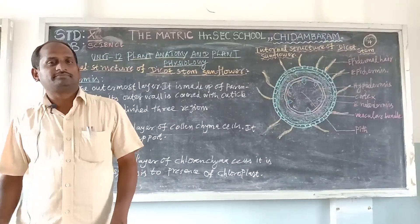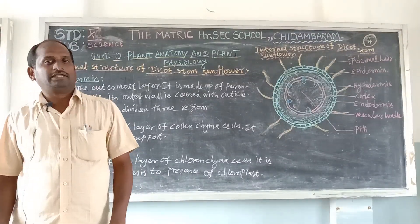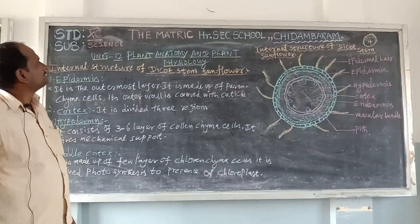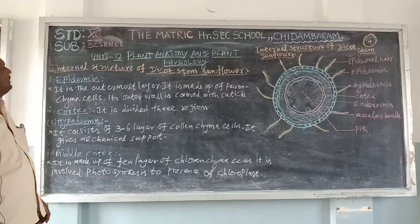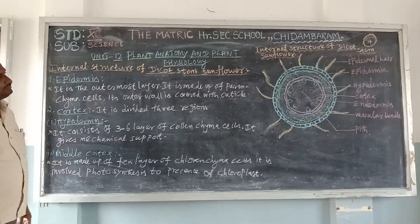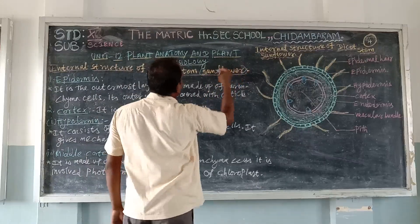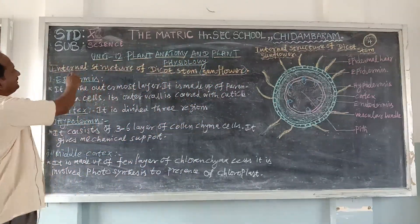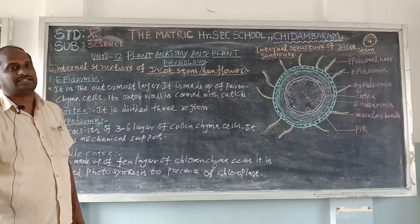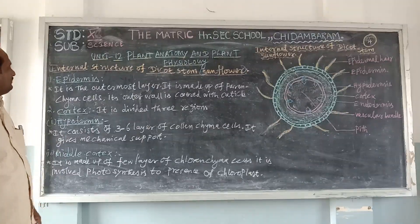Good morning students. The last class is completed — dicot root and monocot root. Today we go to the internal structure of the dicot stem, with the example of the sunflower plant. We will study the internal structure of the dicot stem from LS and TS.